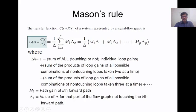Delta is given by: 1 minus the sum of all individual loop gains — touching or non-touching, all loop gains are included — plus the sum of products of loop gains of all possible combinations of non-touching loops taken two at a time, minus the sum of products of loop gains of all possible combinations of non-touching loops taken three at a time, and so on.